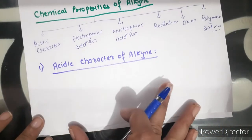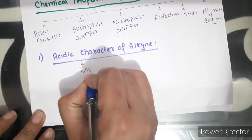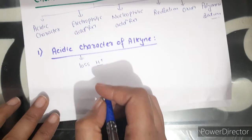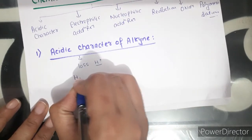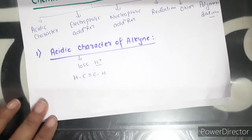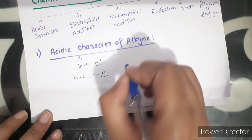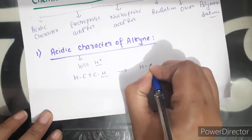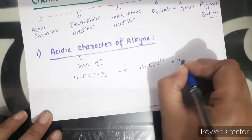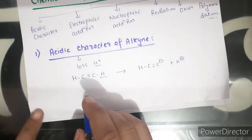What do we mean by acidic nature? Acidic nature means the tendency to release H⁺ ions. Alkynes are acidic in nature, meaning they have the tendency to release their H⁺ ion and convert into their corresponding anion. Any compound which more easily releases H⁺ ions will be more acidic.